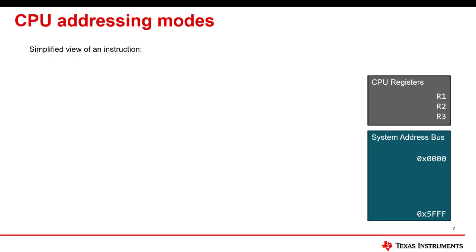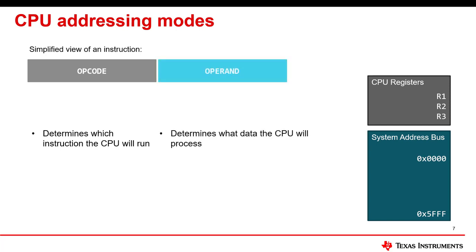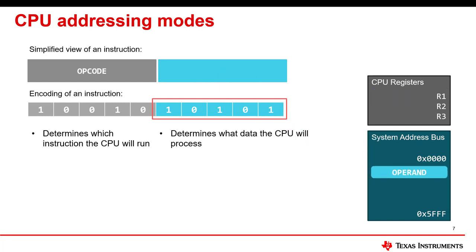In a CPU, the instruction set architecture is comprised of many different instructions. Within each instruction there is an opcode, which describes the instruction's functionality. In addition to the opcode, most instructions will have one or more operands — an operand is the data upon which the instruction will operate, and could be a register or a location in memory. Looking at the encoding of an instruction, the bits associated with the operand generally refer to data somewhere in the system. For example, if the operand is the contents of a register, the encoded bits tell the CPU which register to use. If the operand is located in memory, the encoded bits will be the memory address where the CPU can find the data.